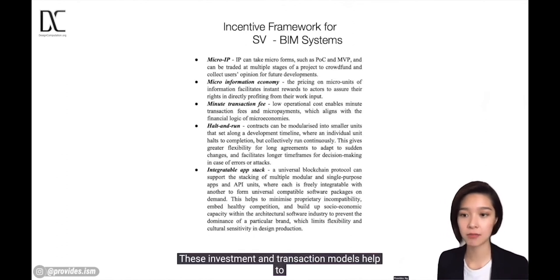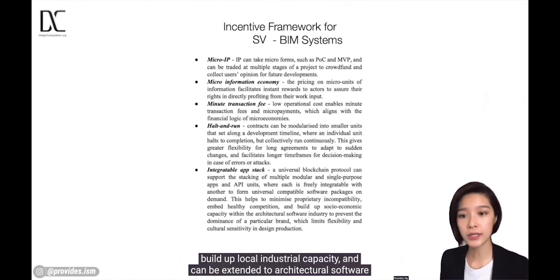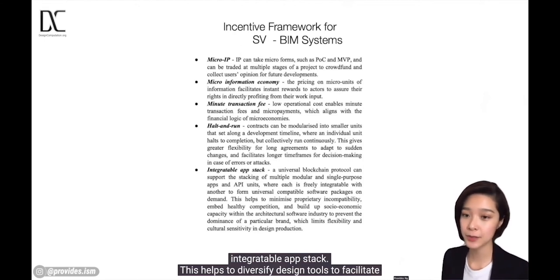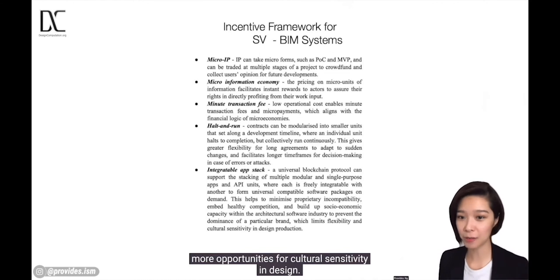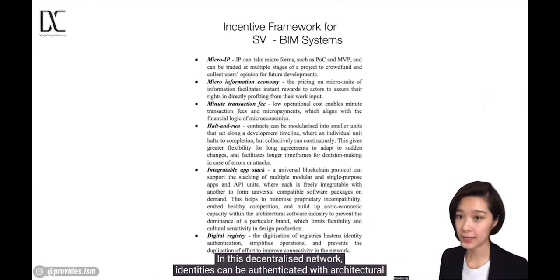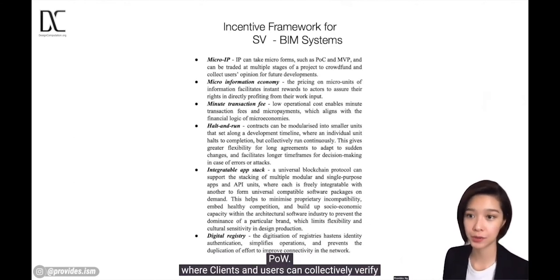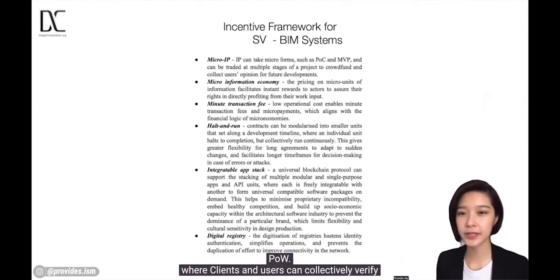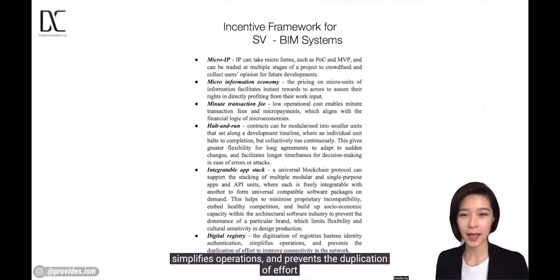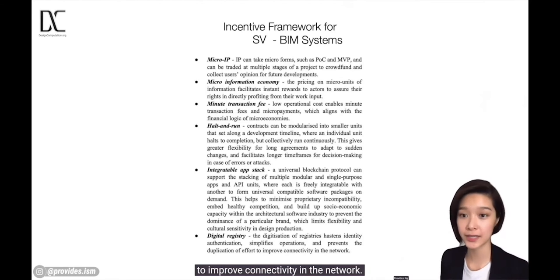These investment and transaction models help to build up local industrial capacity and can be extended to architectural software design to overcome proprietary issues, forming an integratable app stack. This helps to diversify design tools to facilitate more opportunities for cultural sensitivity in design. In this decentralized network, identities can be authenticated with architectural proof-of-work, where clients and users can collectively verify the authenticity and performance of leases using a digital registry in the CDE. This helps to hasten identity authentication, simplify operations, and prevent duplication of effort to improve connectivity in the network.